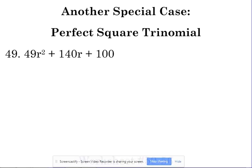49 and 100 are perfect squares. Now 140 is not. The middle number does not need to be a perfect square, but the middle number is a combination here.